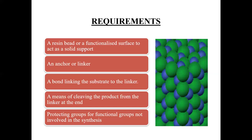If we do not want any reaction at a particular functional group — for example, if we are using an amino acid and the COOH group is present but we do not want to react with the COOH group — we use a protecting group which will protect it. That is the protecting group. Now we are going to use everything together.